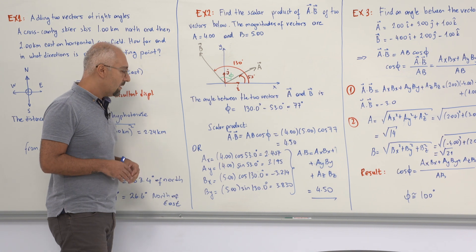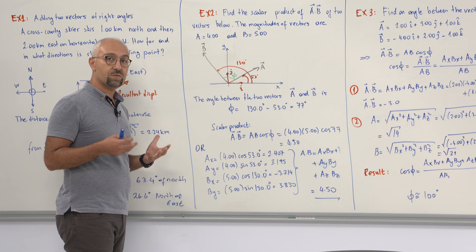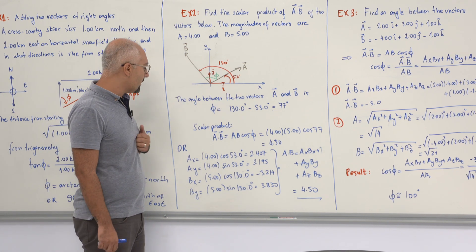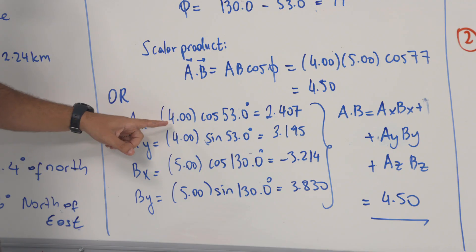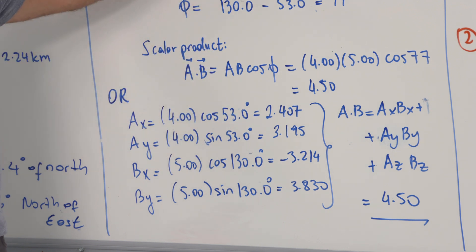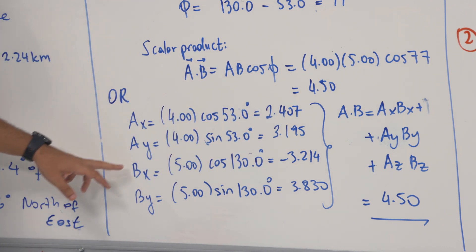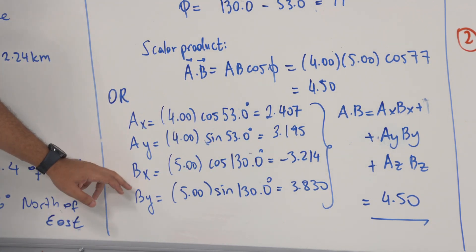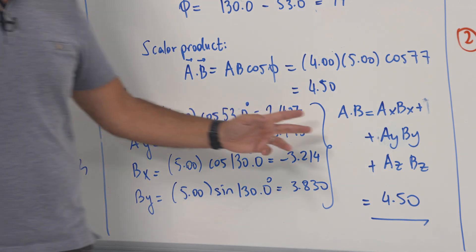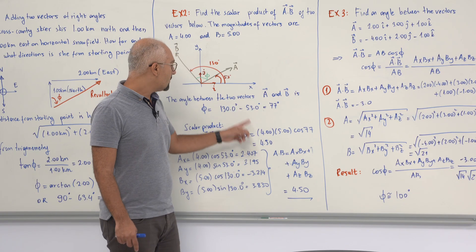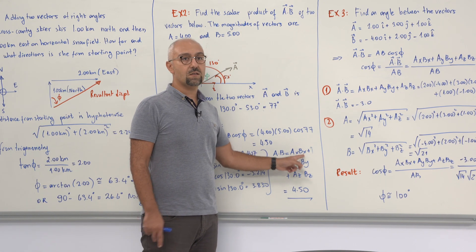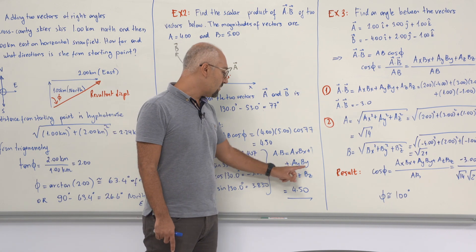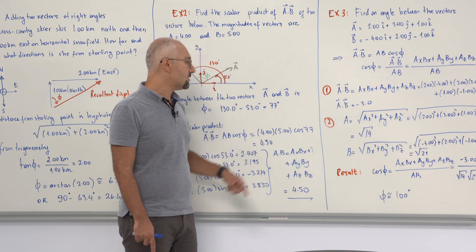There is another way to calculate this using vector components. We can find the x and y components of A and B with respect to the axes. For example, Ax = 4·cos(53) ≈ 2.407, and Ay = 4·sin(53) ≈ 3.2. Applying the same method for Bx and By, the dot product A·B equals Ax·Bx + Ay·By + Az·Bz, since the unit vectors cancel. The results are consistent with the previous method.